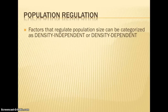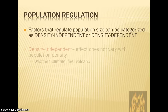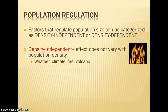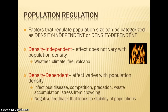Limiting factors that regulate population size fall into two categories: density-independent or density-dependent. Density-independent means the limiting factor is not related to the density of the species — for example, a tornado, hurricane, volcanic eruption, or forest fire will have a negative effect regardless of how many individuals live in that area. Density-dependent factors have different effects depending on population density. An infectious disease spreads more in a higher-density population. Competition and predation also increase with more individuals, and this leads to the negative feedback stabilization around carrying capacity.